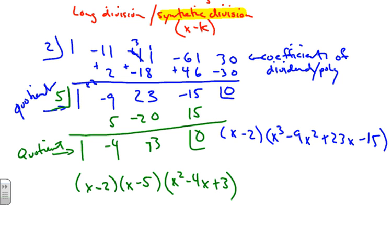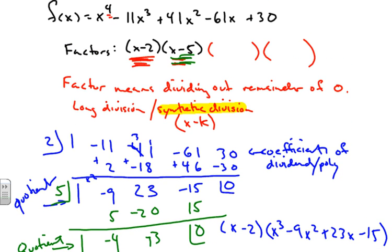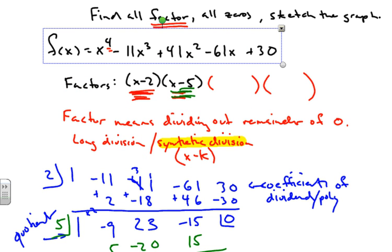Now hopefully we can factor this expression, which we can: (x-3) and (x-1). And now we have a factored polynomial which is actually equivalent to this big thing right here.